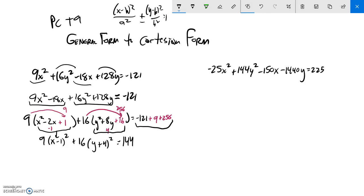So I'm closer to this form. I have x minus h squared, h is 1. y minus k squared, k is negative 4. But I want it equal to 1. So I'm going to divide both sides by 144 now.